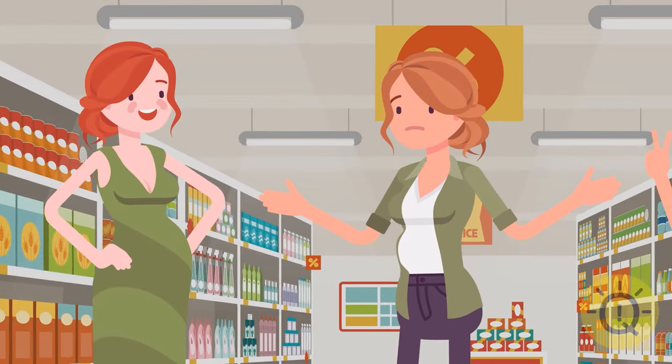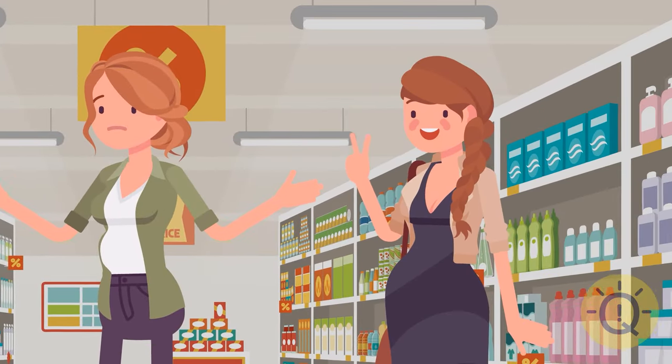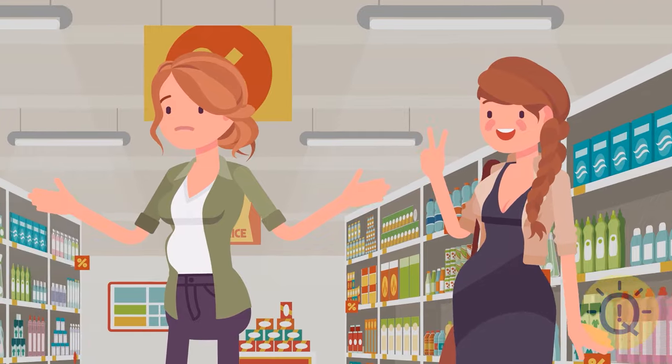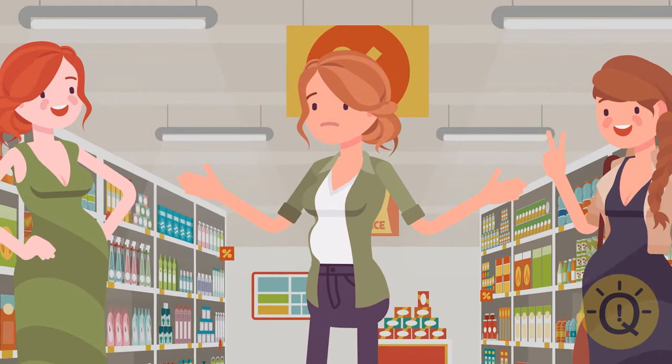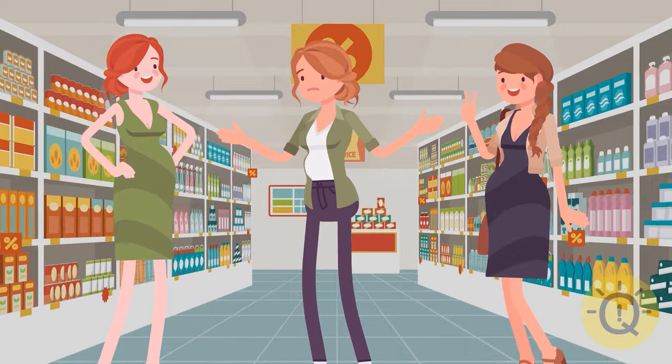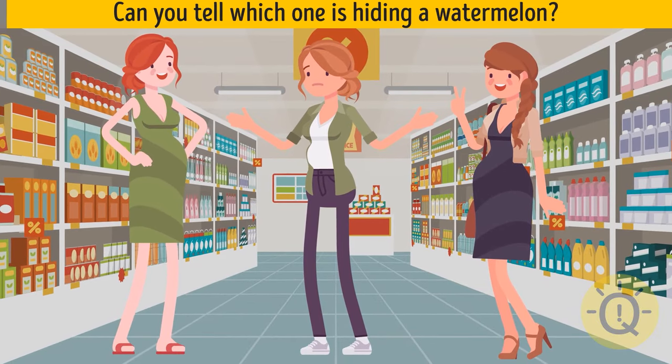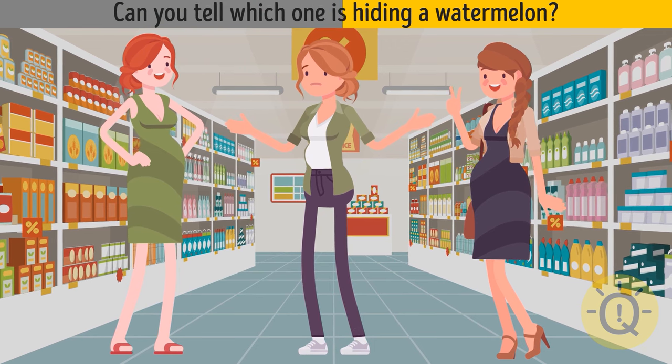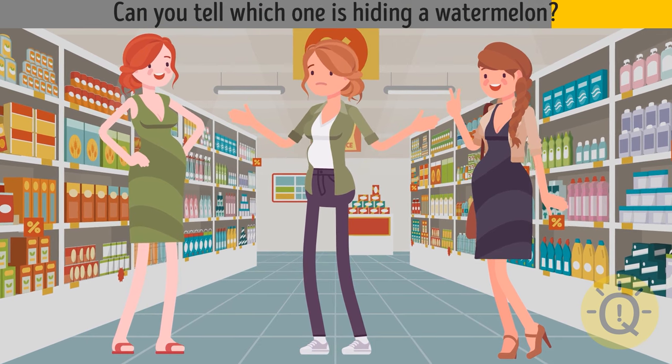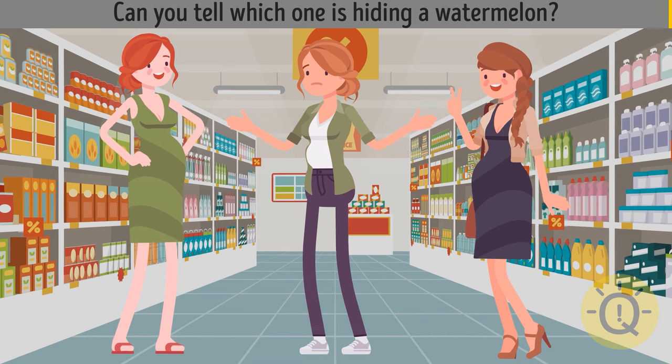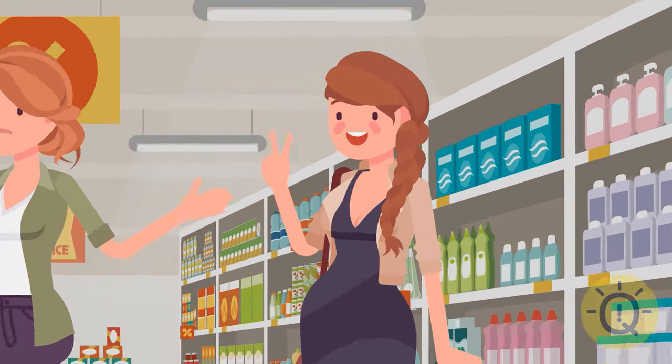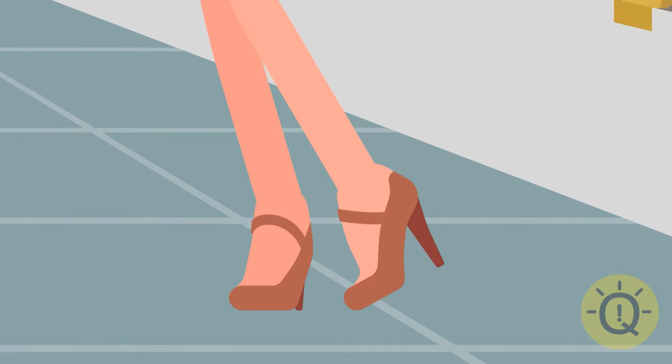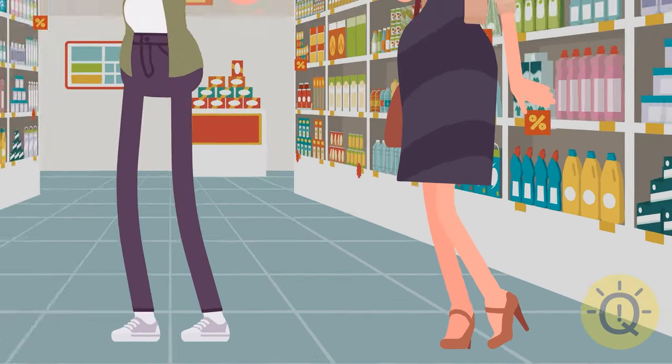These three women, Jessica, Mary and Olivia, went shopping. Two of them are pregnant and one is just trying to steal a watermelon. Can you tell which one is hiding a watermelon? It's Olivia. She's wearing heels. It's not the kind of shoes a pregnant woman would choose to wear.